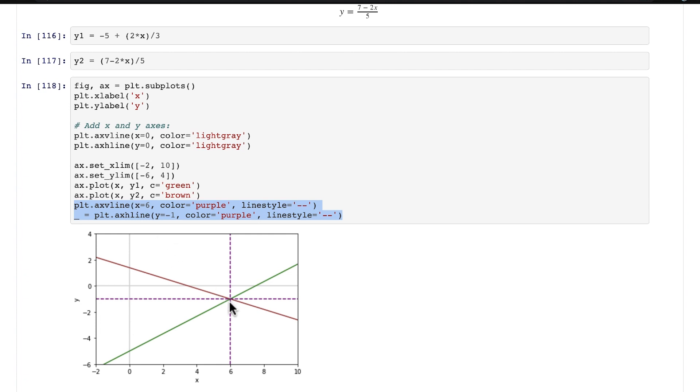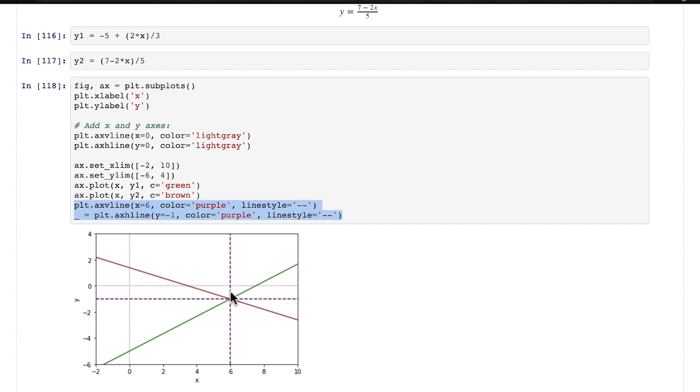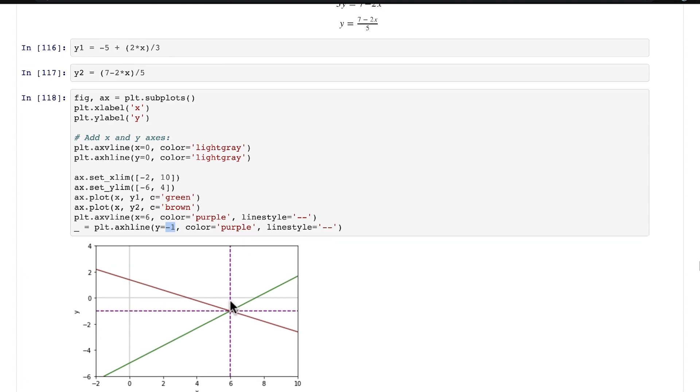And I added the point where the two lines intersect, which we had already solved for here. We determined that the point where they intersect is where x = 6 and y = -1. So I plug those values in, 6 and -1. And voila, that is indeed the point where these two lines cross over. That is the solution to this linear system of two equations.